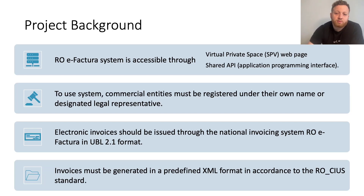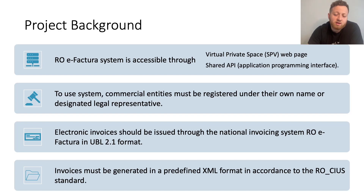The Romanian e-Factura system is accessible through a virtual private space, SPV web page, and a shared API — application programming interface. To use the system, commercial entities must be registered under their own name or designated legal representative. Electronic invoices should be issued through the national invoicing system, Romanian e-Factura, in UBL 2.1 format. Invoices must be generated in a predefined XML format in accordance with the Romanian standard.